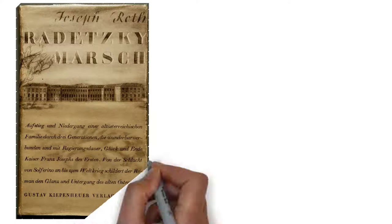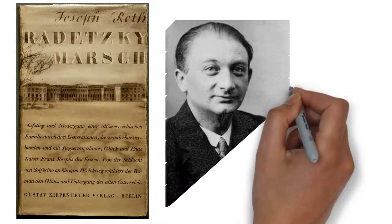The Radetzky March, written by Joseph Roth and published in 1932, was quickly translated to many languages.